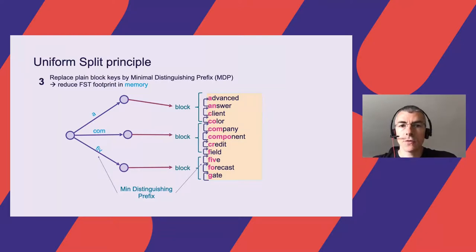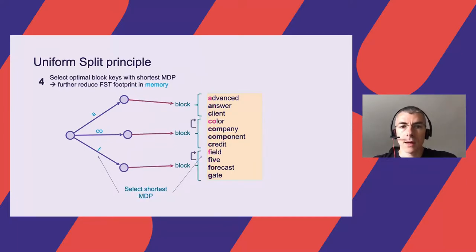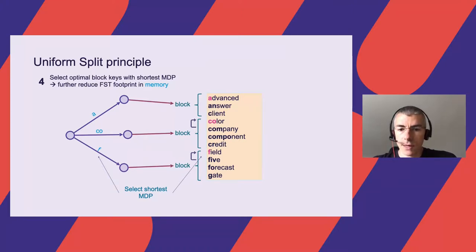We don't need the full term to distinguish a term from its predecessor. We can take the minimal distinguishing prefix (MDP) instead, storing block keys as MDPs rather than full terms — reducing the FST footprint. However, sometimes we can still have long MDPs, so there is a good chance of finding a smaller MDP within neighbor terms. For example, instead of taking a term with a 5-character MDP as the key of a block, we can select the term just before it because its MDP is smaller — just 'F'. So we further optimize by selecting the locally optimal block keys with the shortest MDP.